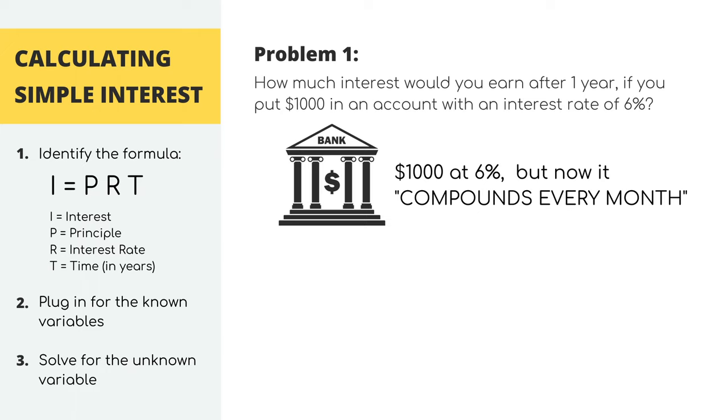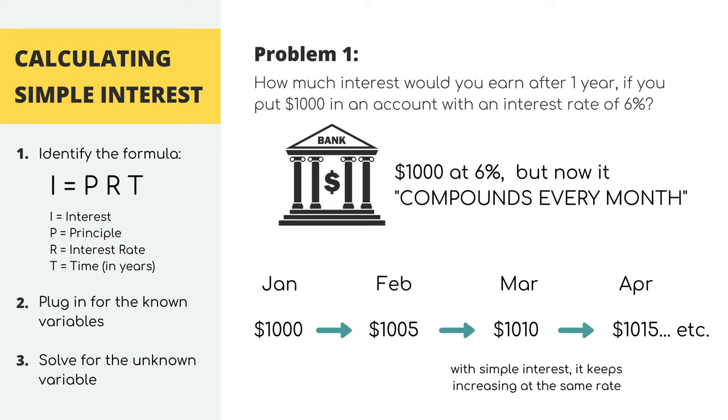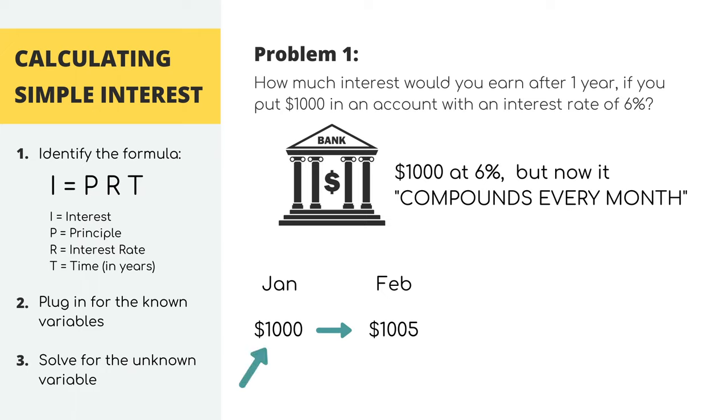That means if we put the money in in January, by the end of the month, we're going to have $1,005. So this is how it was with simple interest also. In the next month, we're still getting 6% interest, but now it's 6% interest on $1,005, not just the $1,000 anymore. So by the end of February, we'll have $1,010 and 2.5 cents in the account. This additional 2.5 cents is because of the compounding.